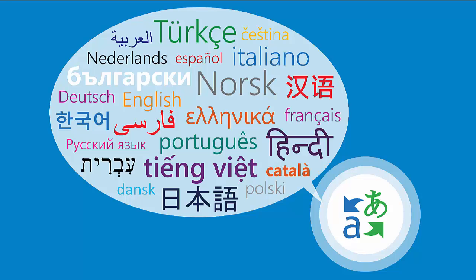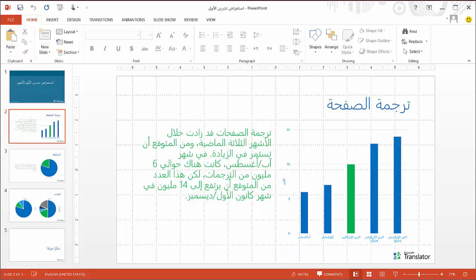I recently received a copy of a PowerPoint presentation from a team in Cairo, Egypt. The presentation was given in Arabic, and unfortunately, I can't read the slides. Luckily, I can use the translation features that are already embedded in Microsoft PowerPoint to translate them automatically.